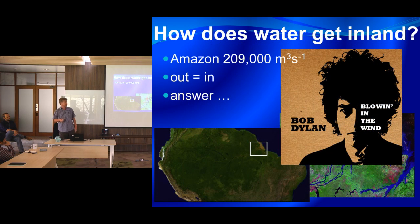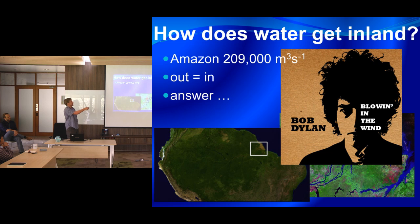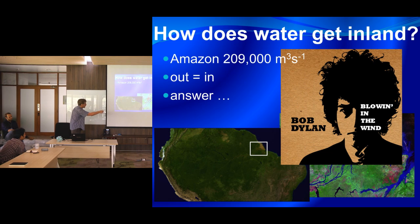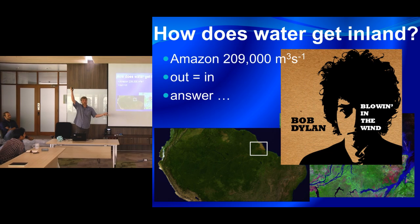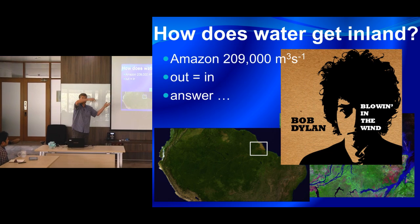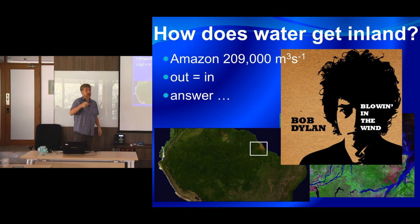If we look at the Amazon Basin, we know how much water is coming out of the mouth every second — one estimate is 209,000 cubic metres per second. Huge amounts of water coming out of this region via the Amazon River. Now if you think about it over a long period of time, what comes out has to be going in. There has to be a balance. So all this water that's flowing out also has to be flowing in from somewhere — we're talking about huge amounts of moisture.